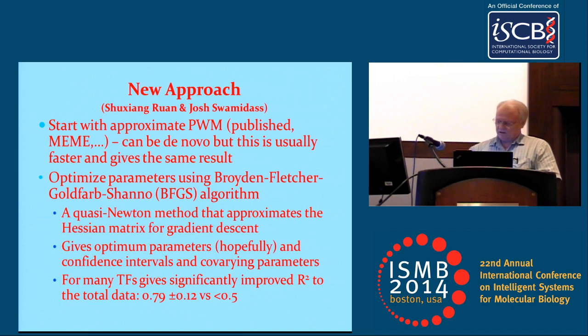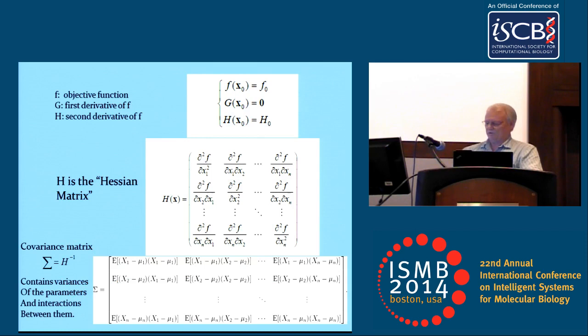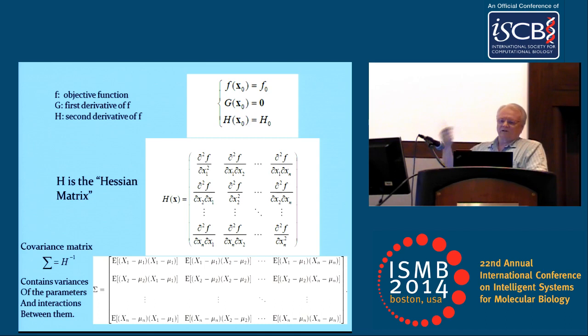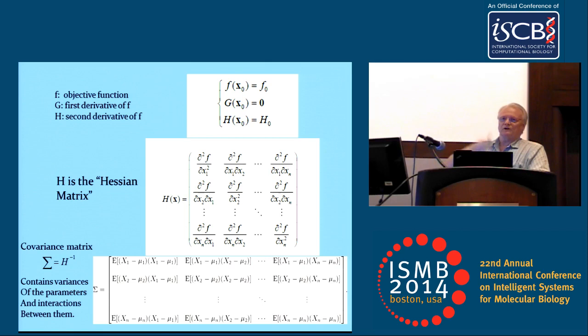For those in machine learning, this will be obvious. F is our objective function — the least squares. G is the first derivative, which by definition goes to zero when we've optimized the parameters. H is the Hessian, the second derivative, used in the optimization procedure. The important thing is that the inverse of the Hessian matrix is the covariance matrix, which gives us directly the confidence intervals on the parameters. The diagonal gives the variance of individual parameters, and the off-diagonal elements can tell us about interactions between parameters, letting us get away from strict additivity.